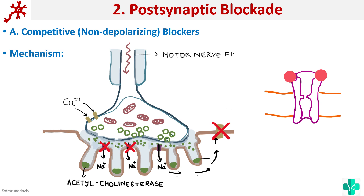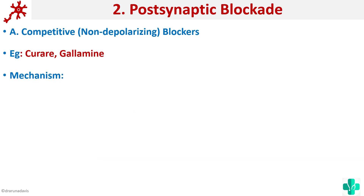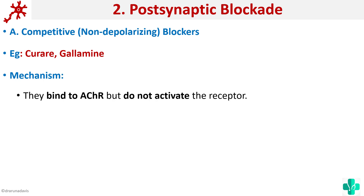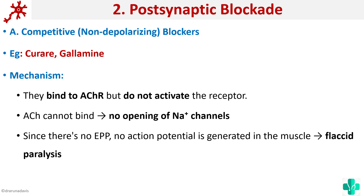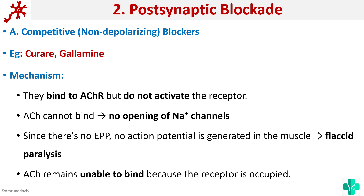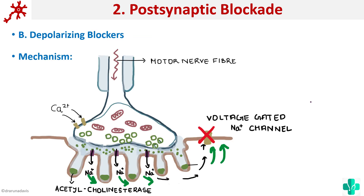Examples of competitive or non-depolarizing blockers are curare and gallamine. They bind to the acetylcholine receptor but do not activate it, so acetylcholine cannot bind, there is no opening of sodium channels, hence no end plate potential and no action potential — there will be flaccid paralysis. The acetylcholine remains unable to bind because the receptor is occupied. That is the mechanism of competitive or non-depolarizing blockers.